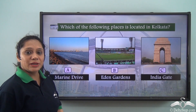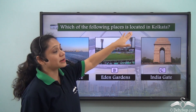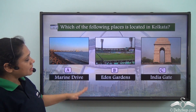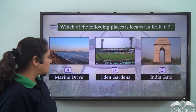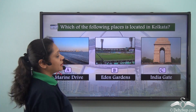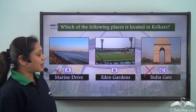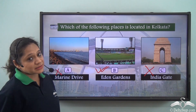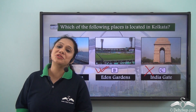Quick exercise: Which of the following places is located in Kolkata — Marine Drive, Eden Gardens, or India Gate? Marine Drive is in Mumbai, India Gate is in Delhi, so Eden Gardens is the correct answer — it is located in Kolkata.